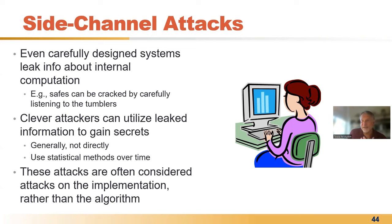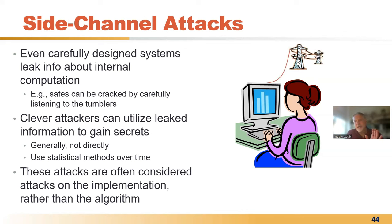Side-channel attacks exist everywhere in our systems because as our systems compute, they leak information through observable properties of the system. For example, when a system computes, the software that is asking to be run varies the amount of energy that system needs. A clever attacker can look at how the energy is being drawn by the system and determine information about the secrets within.